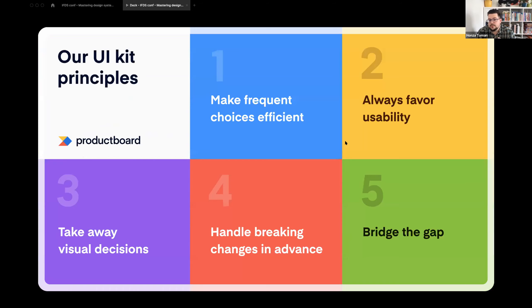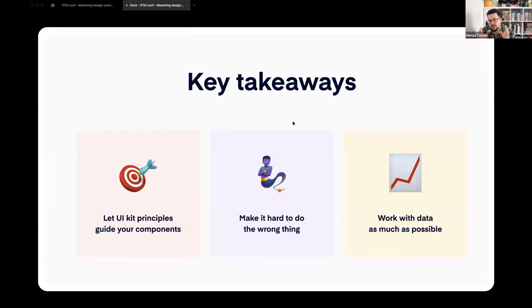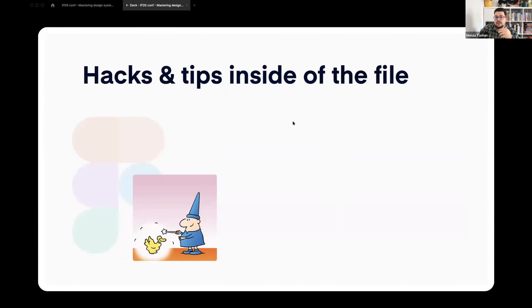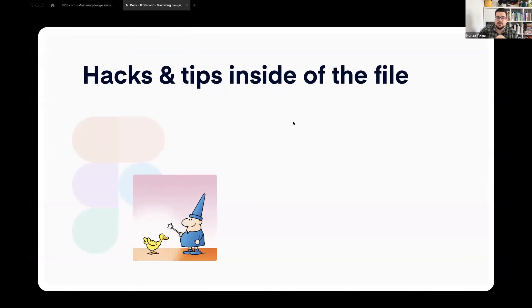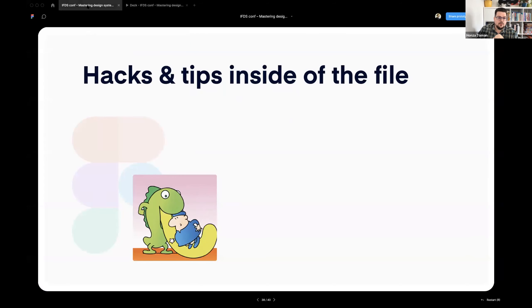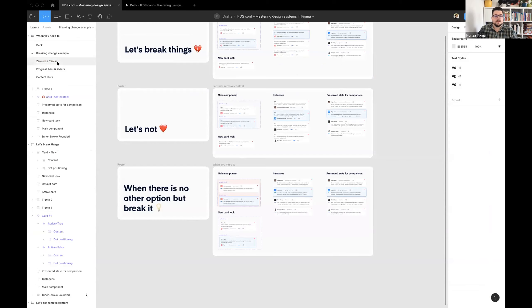To recap, our UIKit principles are: make choices efficient, always favor usability even over maintainability, take away visual decisions, handle breaking changes in advance so we don't break other designers' work, and bridge the gap between Figma and code. Key takeaways: let UIKit principles guide your components, make it hard to do the wrong thing, and work with data as much as possible — there are so many valuable insights there.